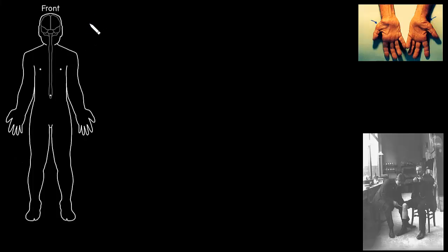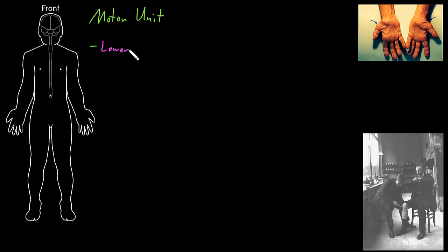In this video, I'm going to talk about the motor unit. The motor unit is made up of a couple of parts. The first part are what are called lower motor neurons. These are efferent neurons of the peripheral nervous system, meaning that they're carrying information away from the central nervous system. These efferent neurons synapse on and control skeletal muscle.